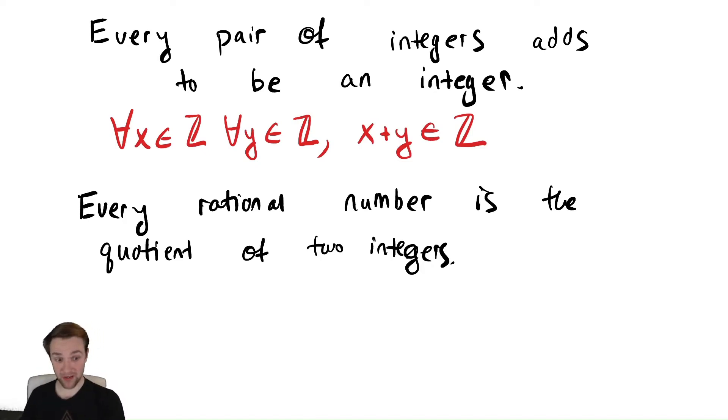The way that we write this down is it says every rational number. So we start by saying something like for all rational numbers. So I'm going to say for all q in Q. And we write it down as the quotient of two integers. So two integers means I'm going to need to say that there are two integers. Notice I said there are. So I'm going to say there exists. I need to say that there exists two integers. So there exists an a that is an integer, and there exists a b that is an integer.